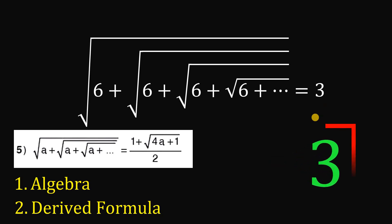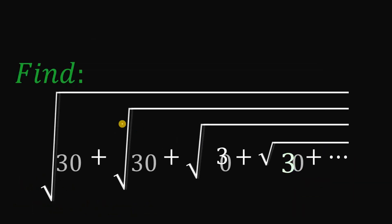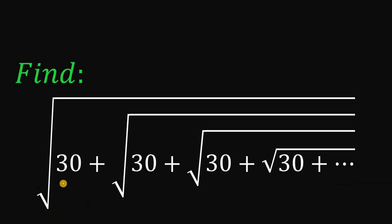Here's your task: find the value of the square root of 30 plus the square root of 30 plus the square root of 30 until infinity. And as always, we are done.